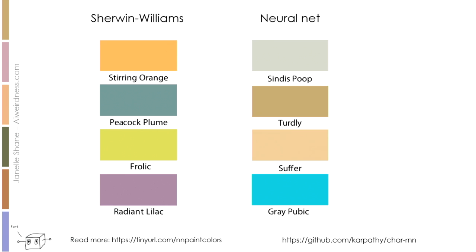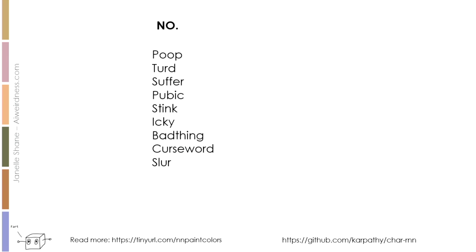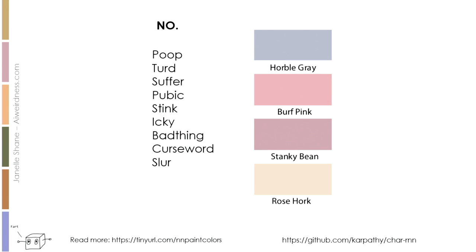And these ones are kind of like that, but I don't think 'Turdly' is going to be the 2019 color of the year. It's actually tough to get rid of a problem like this. You can come up with a no-list and say you may not use any words on this list. But you cannot imagine all the different ways in which an algorithm is going to get around you and do something unexpected.